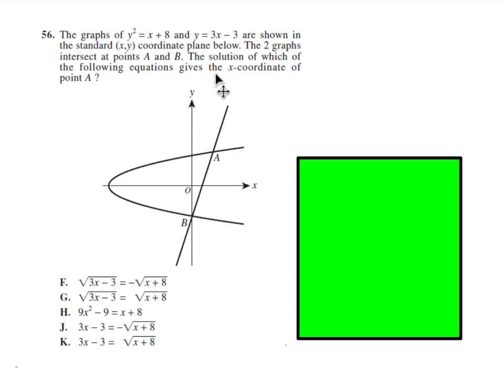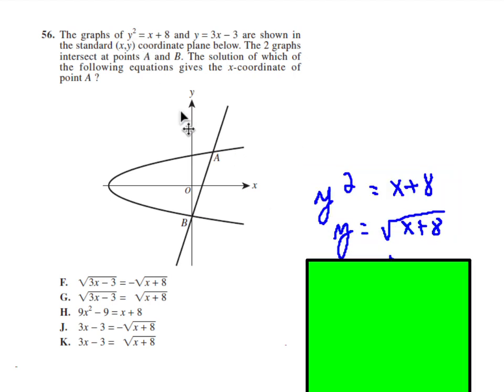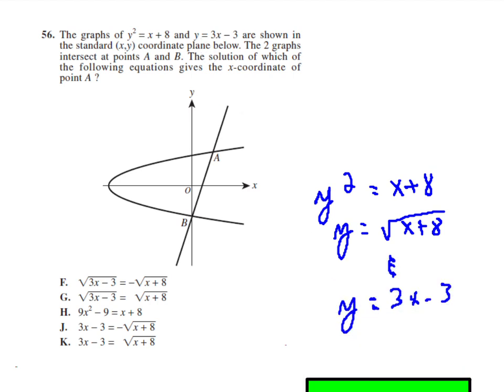Number 56 wants us to find the x-coordinate of point A. Notice that point A is one of two points where these two graphs intersect. What I did was I took the equation for this parabola and I solved for y. I just took the square root of both sides. The other equation is already solved for y. So since y is right here and here, that means these two must be equal. Hence the answer is K.